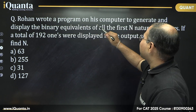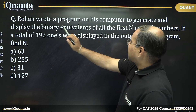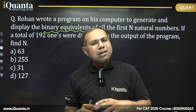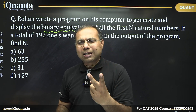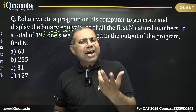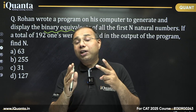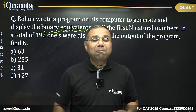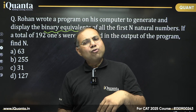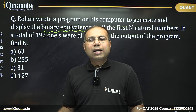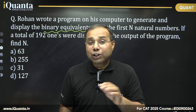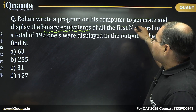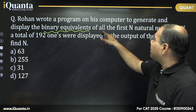The question says: Rohan wrote a program on his computer to generate and display the binary equivalents. What is binary equivalence? It is base 2. When we write any number in binary or base 2, we are using only 2 digits. Binary means 'bi' refers to 2. We use only 2 different symbols or digits to write all the numbers, and those 2 digits are 0 and 1.